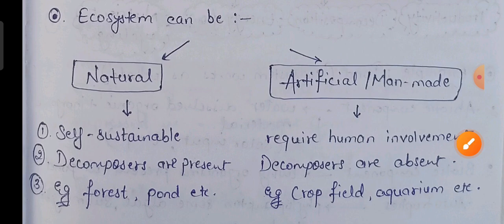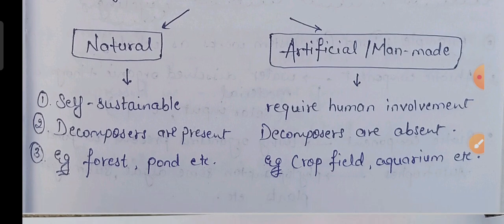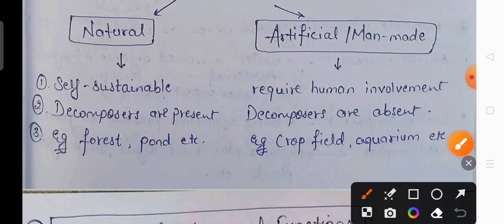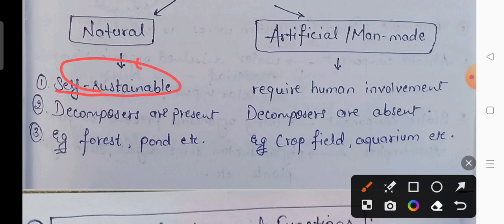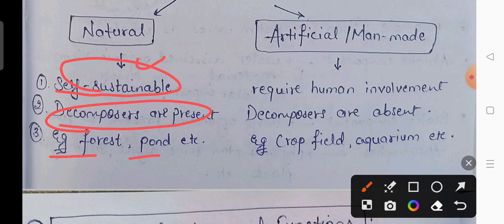Ecosystem can further be divided into two parts: it could be a natural ecosystem or it could be an artificial or man-made ecosystem. Natural ecosystem woh hota hai jo self-sustainable hota hai, yani ki woh khud-ba-khud survive kar sakta hai, without human involvement. Natural ecosystem mein decomposers present hain, yani saprophytes present hain. Example hai forest, pond, etc.